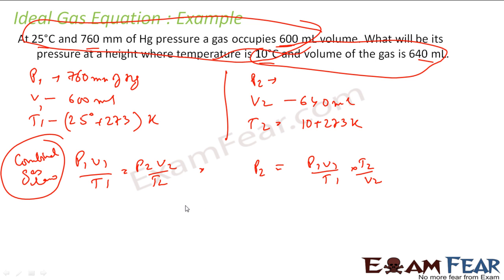Let us put the values here. P1 is 760 mm of Hg times V1 is 600 ml by T1 that is 25 plus 273 that is 298 Kelvin times T2 is 283 Kelvin by V2 640 ml. ML, ML cancel, Kelvin, Kelvin cancel. So what I am left with is 676.6 and this is mm of Hg.